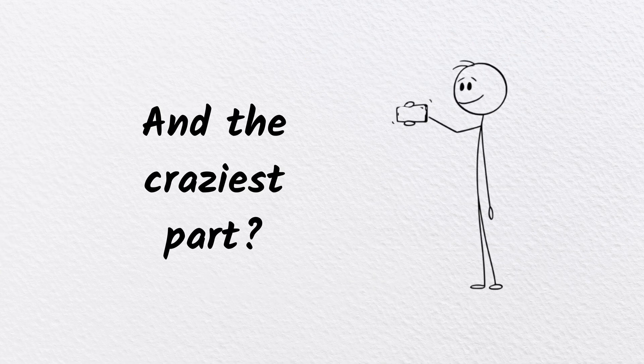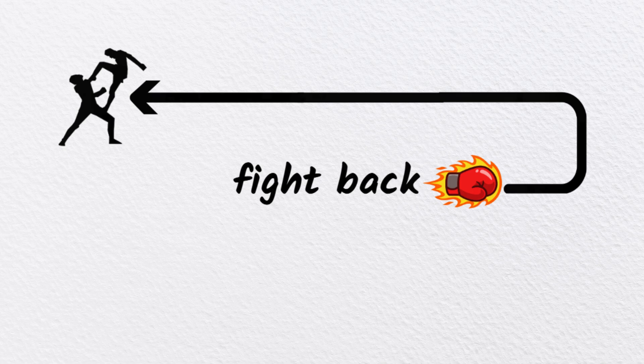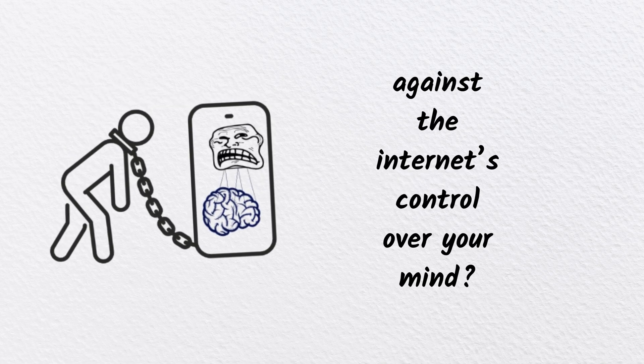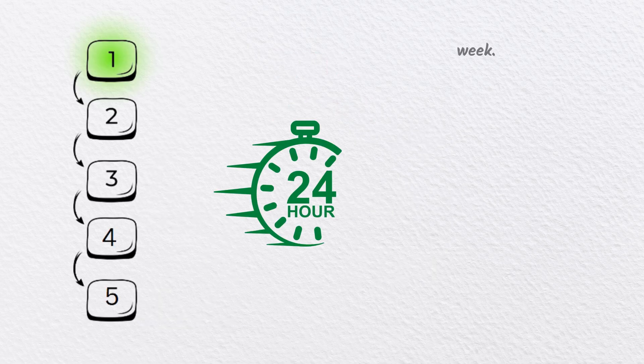So what can you do? How do you fight back against the internet's control over your mind? Here's the five-step detox plan. One: Digital fasting. Take 24 hours completely offline once a week. Your brain needs a reset.